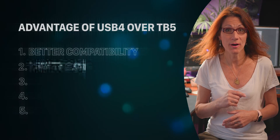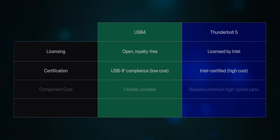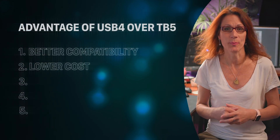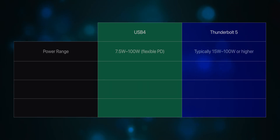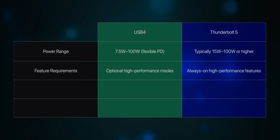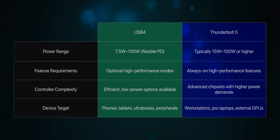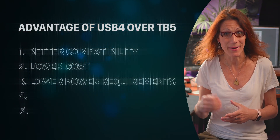Second, lower cost. USB 4 SSDs and enclosures are typically cheaper than Thunderbolt 5 counterparts. Thunderbolt 5 requires stricter certification and more expensive components, which raises the overall price. Third, lower power requirements. USB 4 devices often use less power, which is beneficial for battery-powered setups like laptops or tablets. Thunderbolt 5 can support power-hungry devices, but the SSD itself may not need that bandwidth or power.